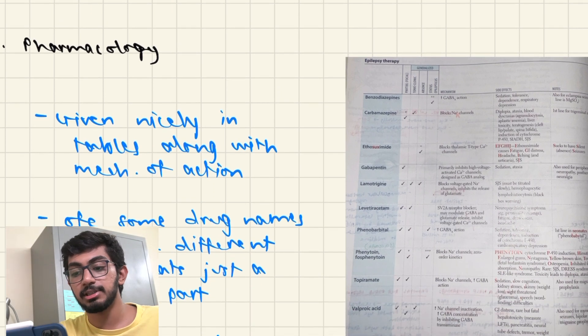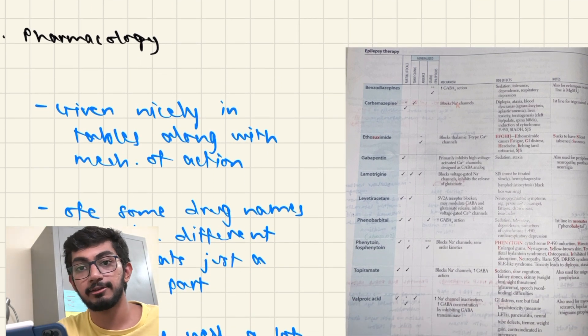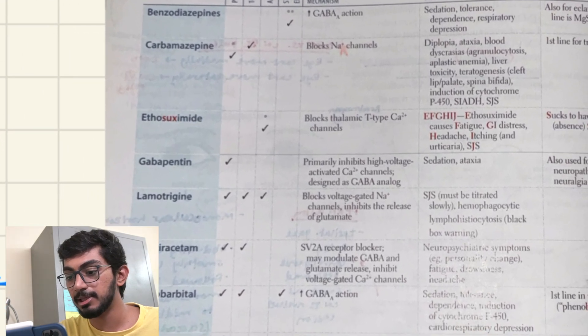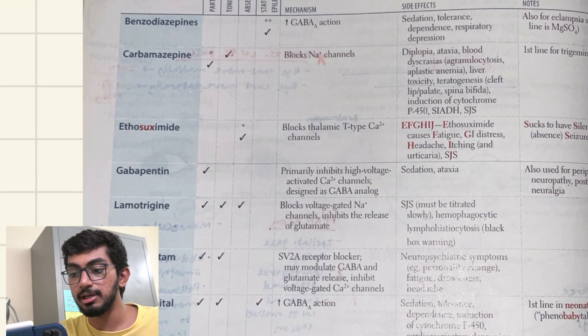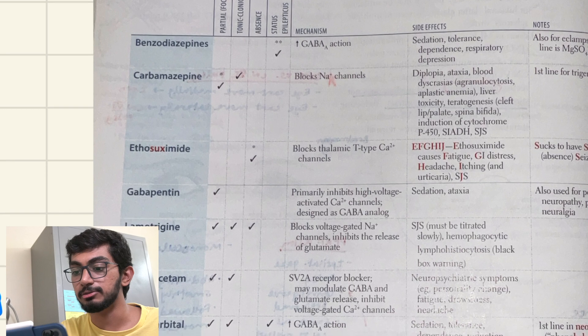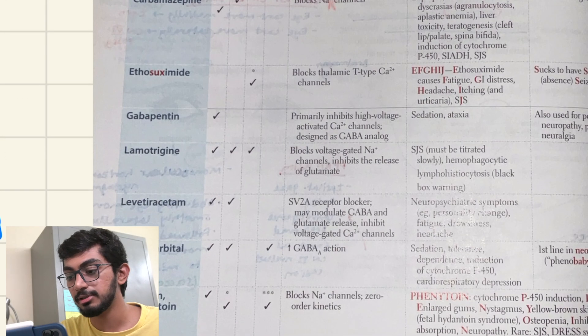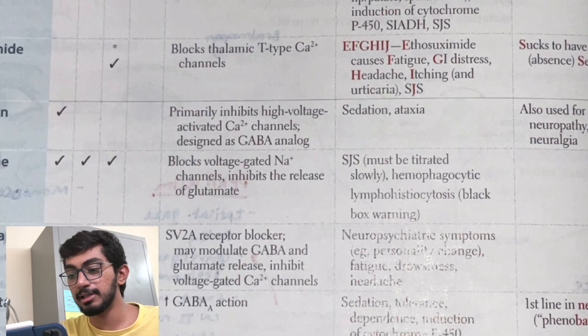The next is Pharmacology. Again, it's given after Pathology and this is probably the last section in each system-wise manner. It is given nicely along with tables and mechanism of action of each drug. And you can see some of the anti-epileptic drugs that are given here. It has all the mechanisms and the uses, which type of seizure can be used in. And yeah, some mnemonics are present.